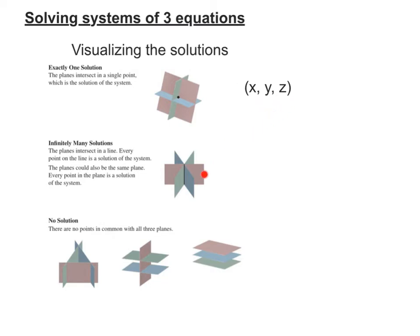When we have infinitely many solutions, there's two options. The planes could be intersecting like this in a line, and then our solution is more of an equation, a value for z, or any of the three variables could be used.